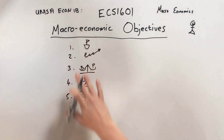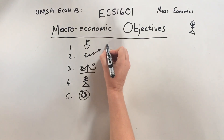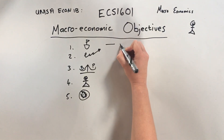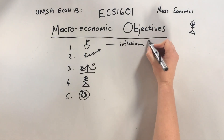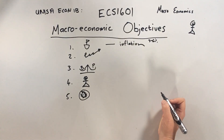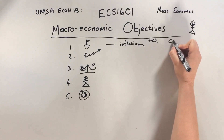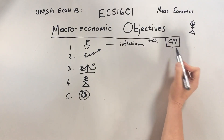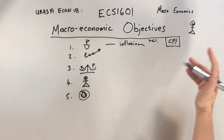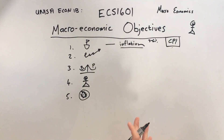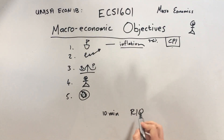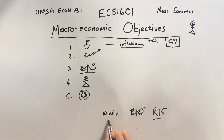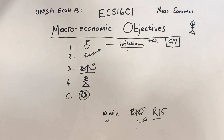Now how do we measure these? For price stability, we look at inflation. There's an inflation target of three to six percent, targeted through monetary policy. We measure inflation by looking at the CPI — Consumer Price Index. If the CPI goes up year on year, it means there is inflation. For example, if last year 10 minutes of airtime cost 10 Rand and this year it costs 15 Rand for the same thing, that means there was inflation.